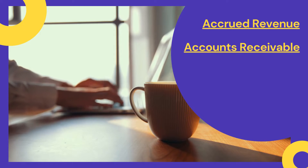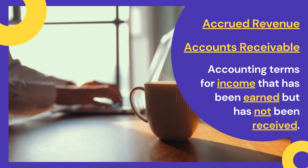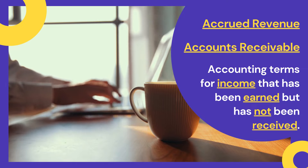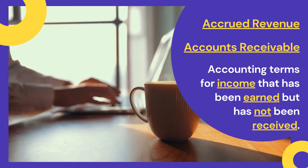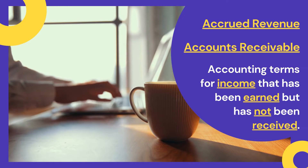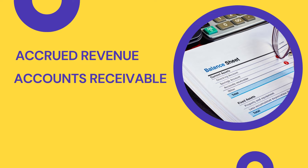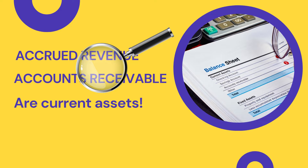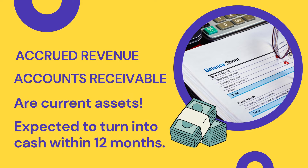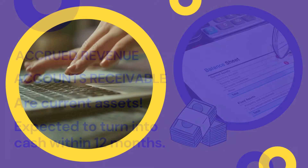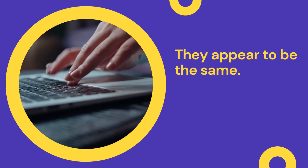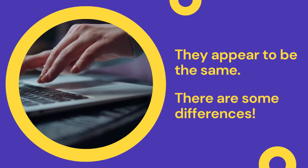Accrued Revenue and Accounts Receivable are both accounting terms for income that has been earned and recognised in the accounts but has not yet been received. Both are current assets that appear in the same section of the balance sheet and are expected to be turned into cash within the next 12 months. But while they appear to be the same thing, there are some differences.